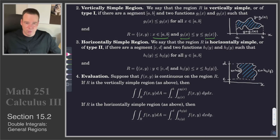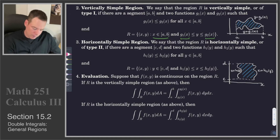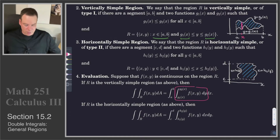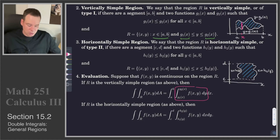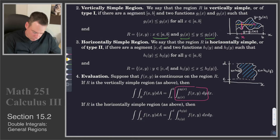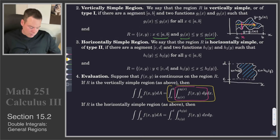To integrate a function of two variables over a vertically simple region, we fix some x value and integrate along the vertical line segment first — the integral with respect to y — as y ranges from g1(x) up to g2(x). Then we let that line segment sweep out the region by integrating the x values from a to b. That outermost integral sweeps out the region.